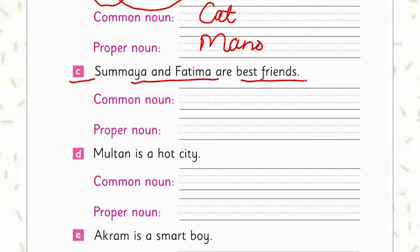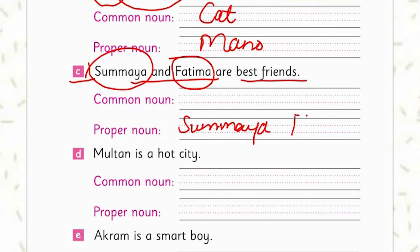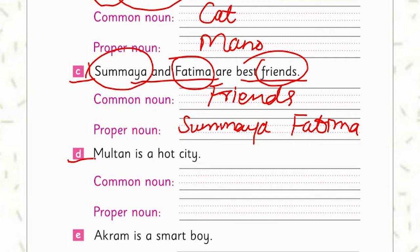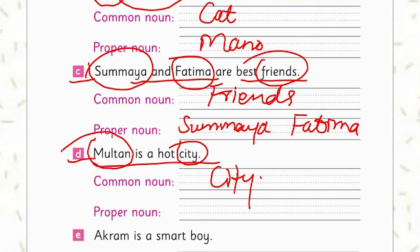Sentence C: 'Sumaiya and Fatima are best friends.' Here you can see Sumaiya and Fatima, with first capital letters, are proper nouns. Friends is a common noun — it can be any friends, friends in general. Sentence D: 'Multan is a hot city.' City is the common noun, and Multan is the specific, proper noun.